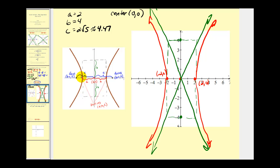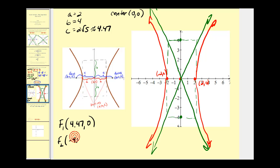We're also often asked to find the foci. The foci will be somewhere to the right and to the left, so we add and subtract c to the x-coordinate of the center. Since the center is (0, 0), we get 0 plus 4.47, giving focus (4.47, 0), and 0 minus 4.47, giving focus (−4.47, 0). Let's go ahead and look at one more example.